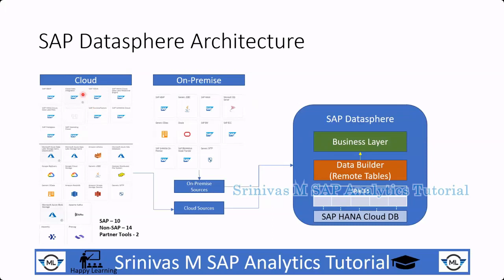SAP provides different source system connection options from both cloud and on-premise. From the cloud, SAP currently has around 10 SAP connections, 14 non-SAP cloud-based connections, and two partner tools. On the on-premise side, there are additional on-premise source system connections available within Datasphere. Overall, SAP Datasphere is a cloud-based product where we can implement ETL data flows, just like BW.